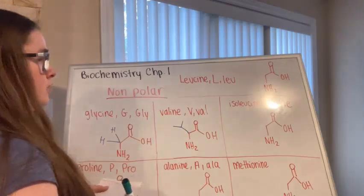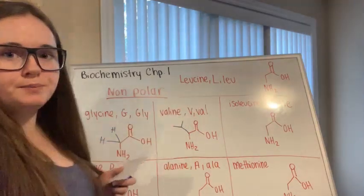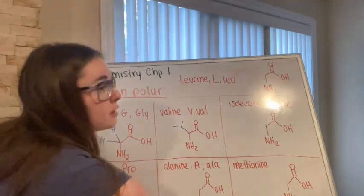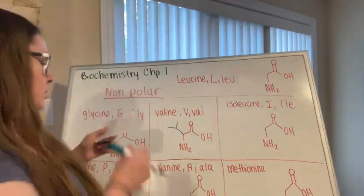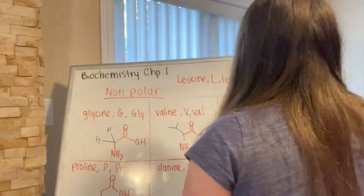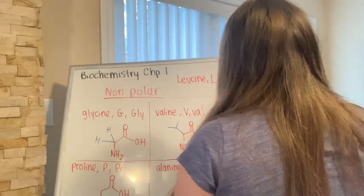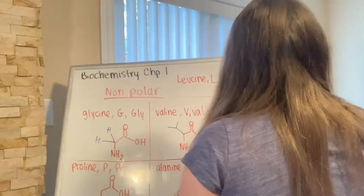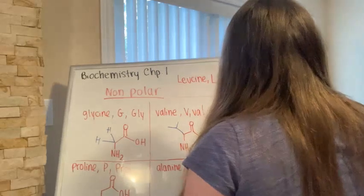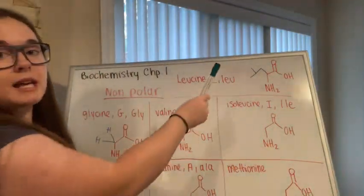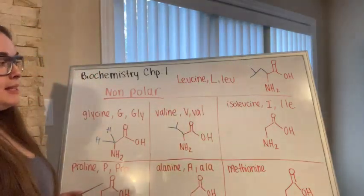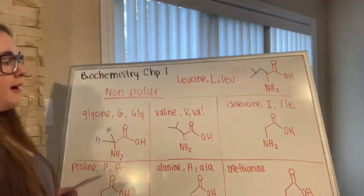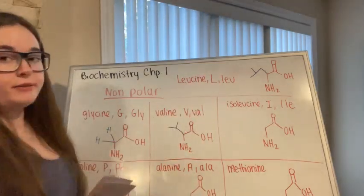The next non-polar amino acid is leucine. Leucine has one, two, three, four carbons in a side chain attached to the alpha carbon of the amino acid.